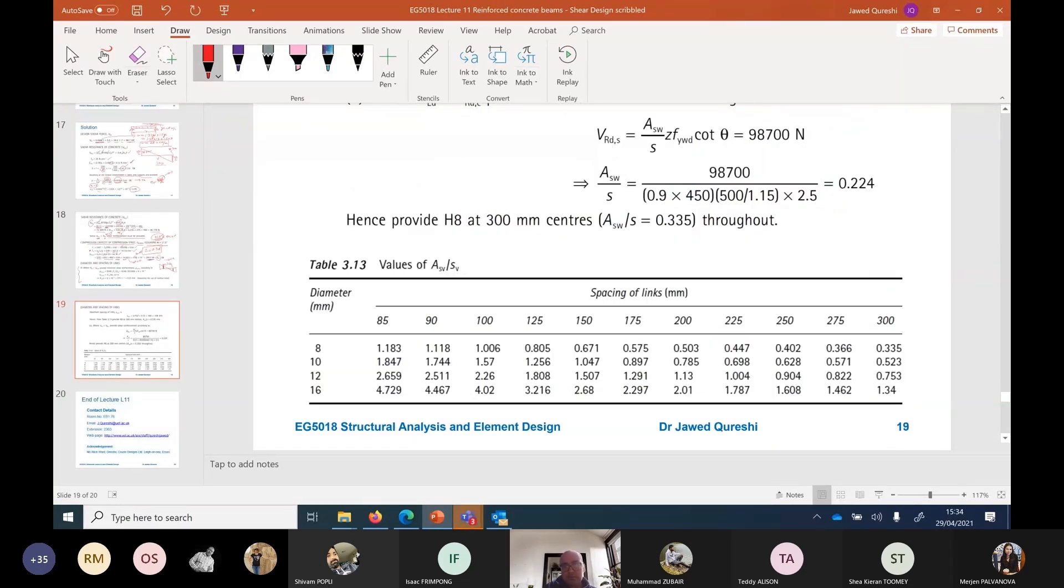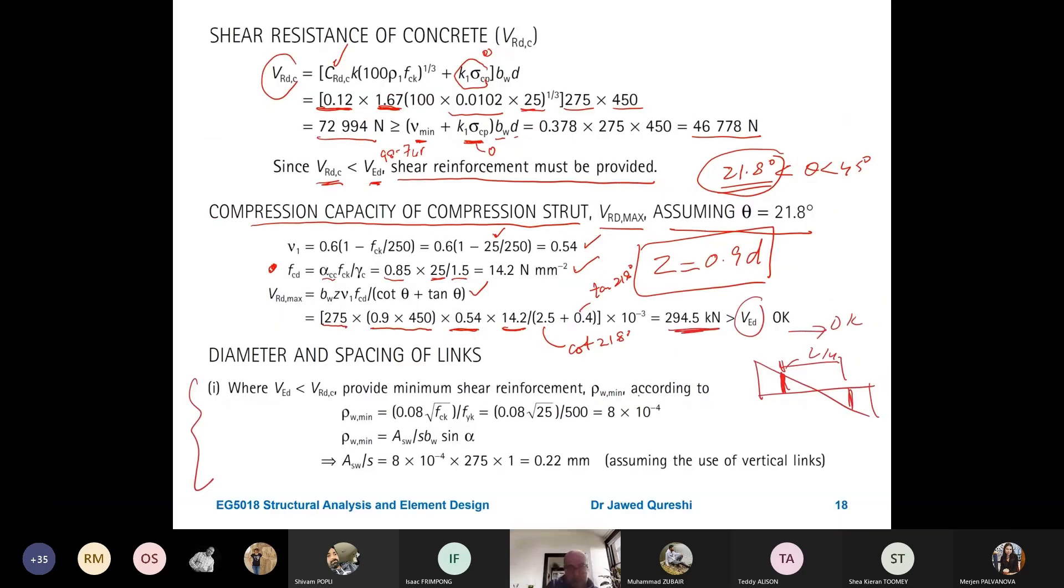We have to provide minimum reinforcement somewhere or we can check it as well. So, for minimum, we have this formula 0.08 into FCK divided by FYK. FCK is 25. FYK is 500. Minimum reinforcement ratio is 8 into 10 raised minus 4. The minimum reinforcement ratio is also equal to ASW means area of shear reinforcement divided by S into BW into sin alpha. What is sin alpha? Alpha is the angle of stirrup. So, if you're using vertical stirrup, angle is going to be 90.